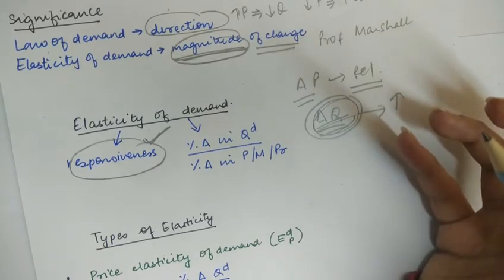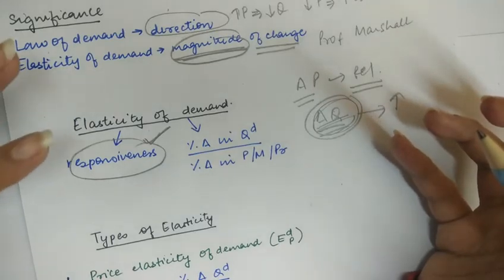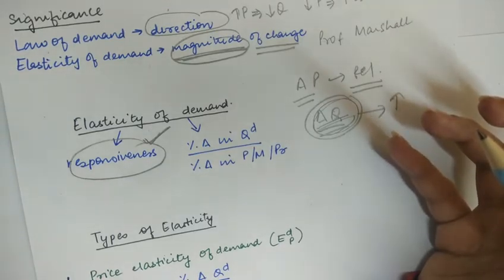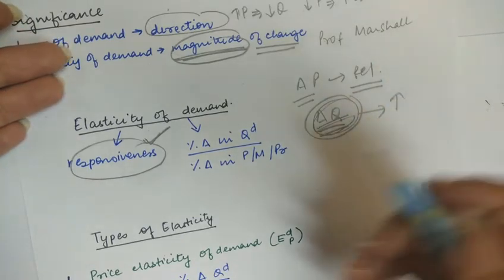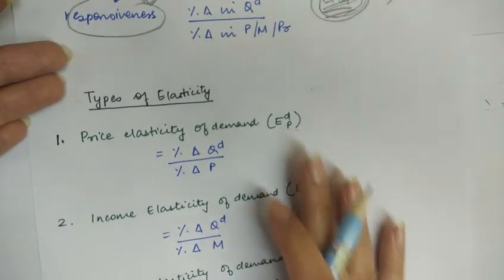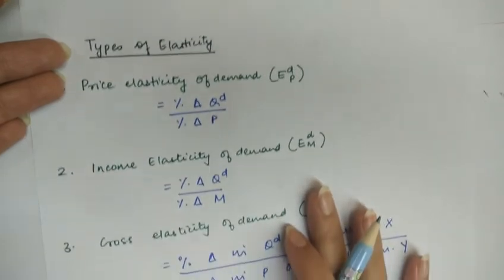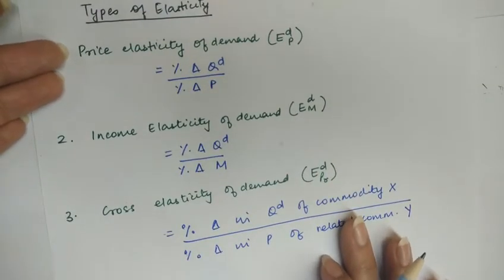There are three main determinants of elasticity of demand: price elasticity of demand, income elasticity of demand, and cross elasticity of demand.